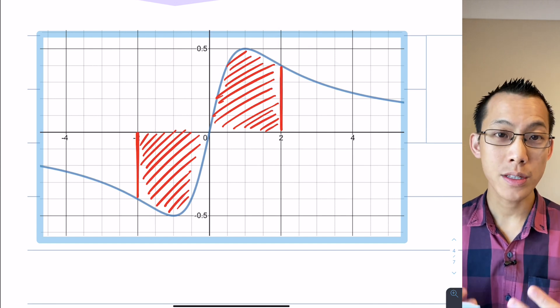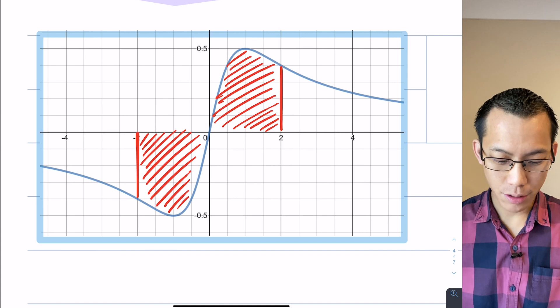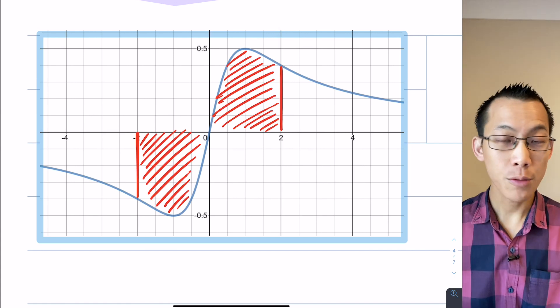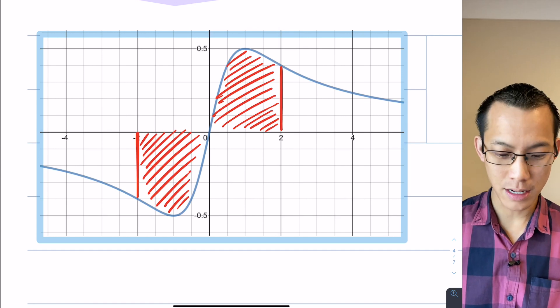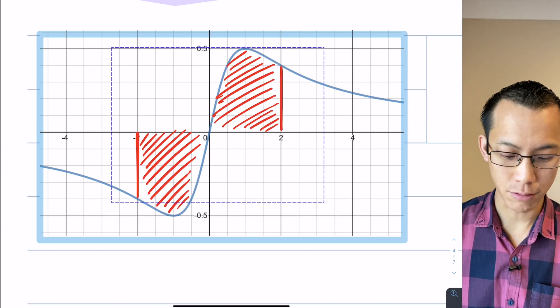So when I add these two together, because they're the same size, this integral from negative 2 to 2 will be 0. I don't even know what this function is but I still know that the definite integral will be 0.